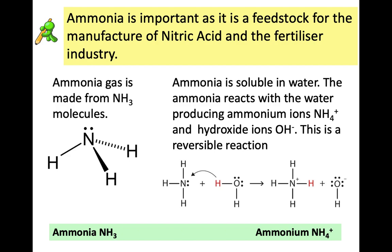Ammonia gas is made from NH3 molecules and it is very soluble in water. Ammonia will react with water and it will produce ammonium ions, which are NH4 plus — they are positive ions — and hydroxide ions. This is a reversible reaction; you may see it represented with a double-headed arrow as well.